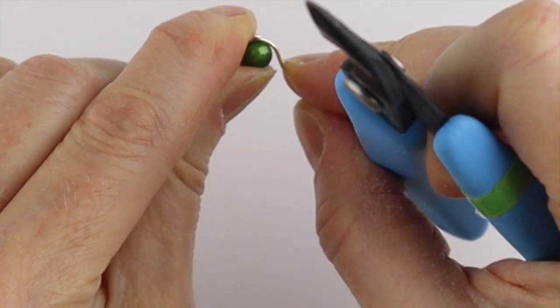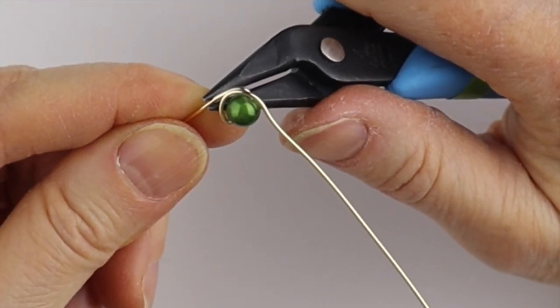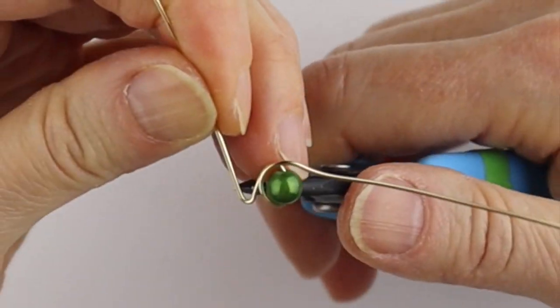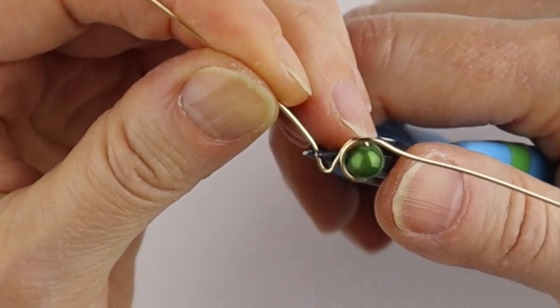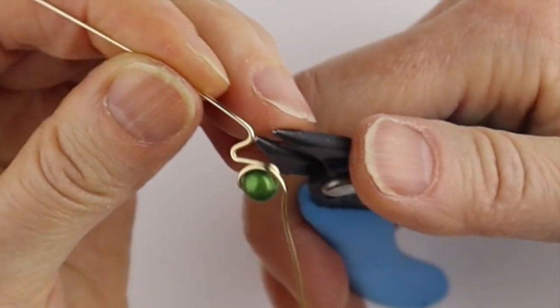I'm just going to push these out a little bit more, take the round pliers and then just bring this up and then cross a little bit, forming the head.